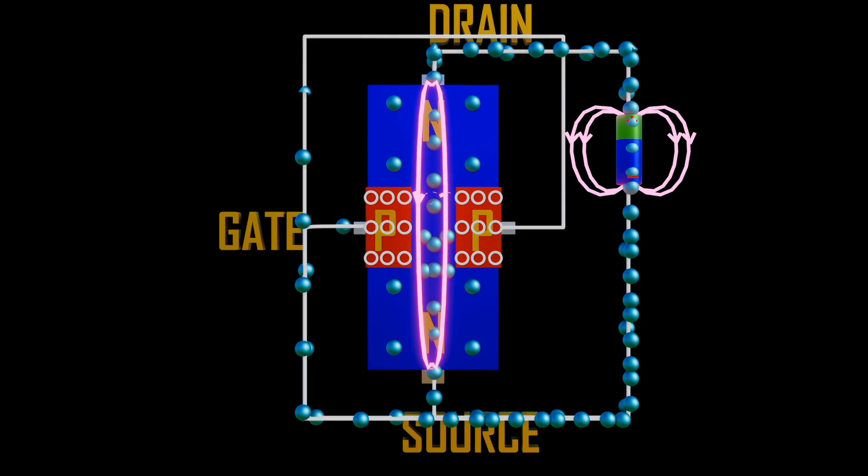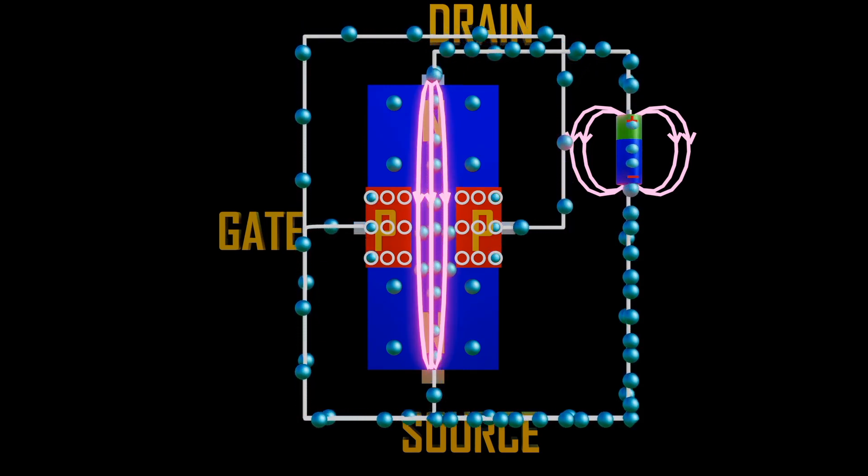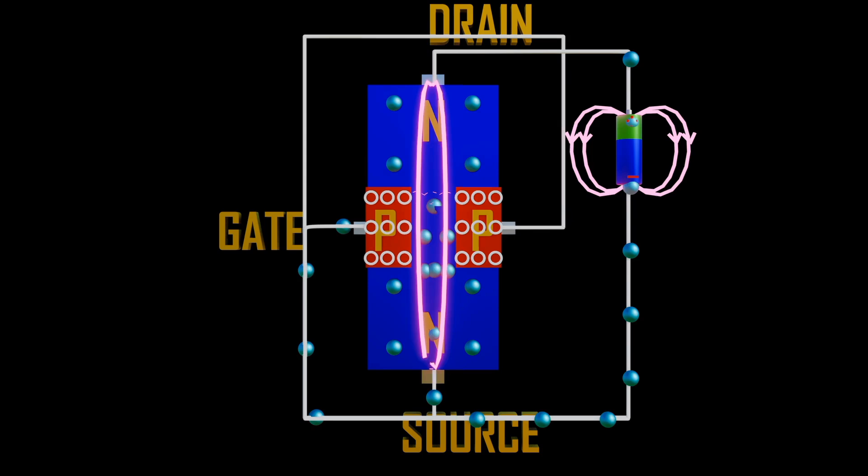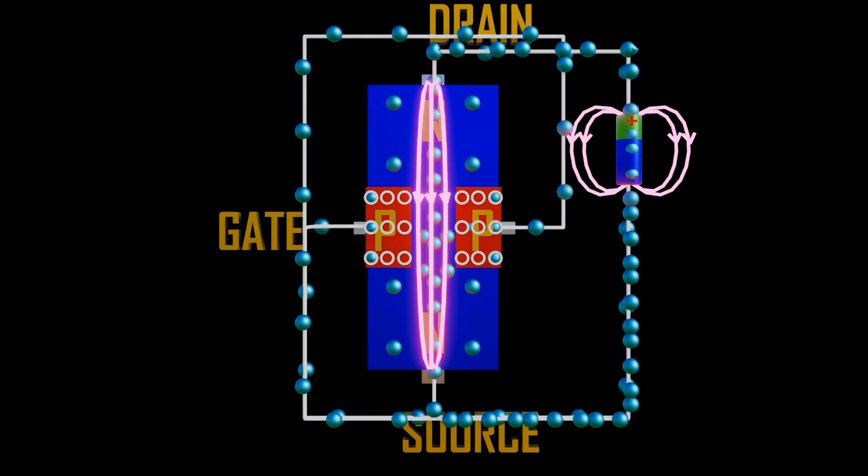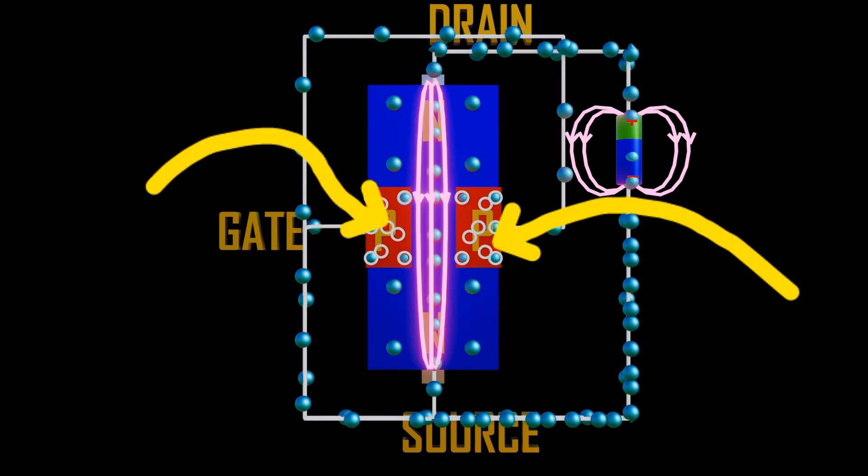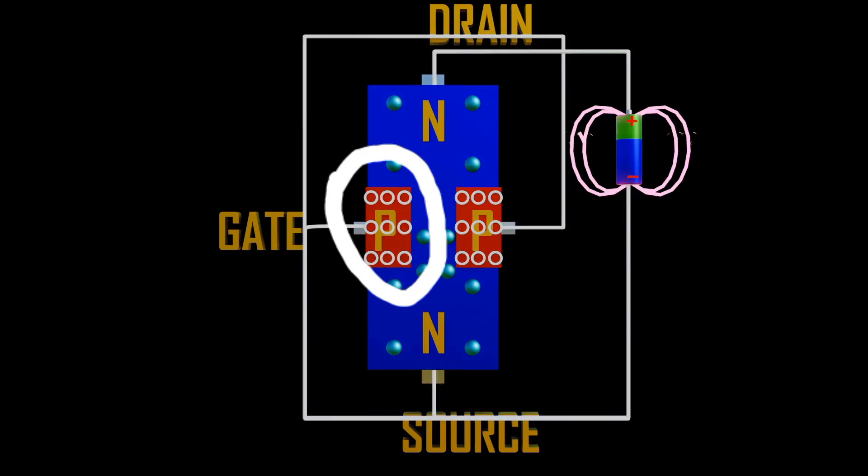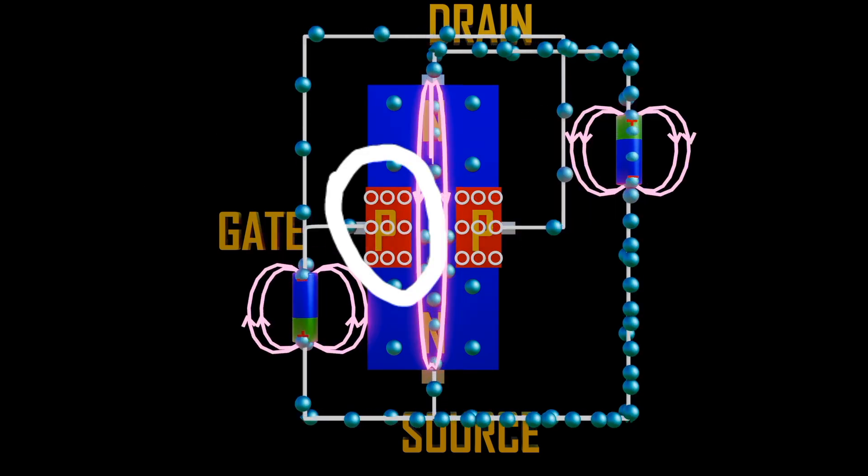When the gate is connected, electrons will enter through the gate terminal. In N-channel, the gate contains holes. Hence holes in this region try to move towards the terminal of the gate. A depletion region is formed between the channel and gate terminal. Here the depletion region is small since voltage is small at the gate.